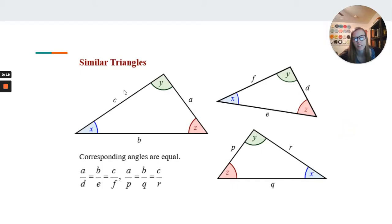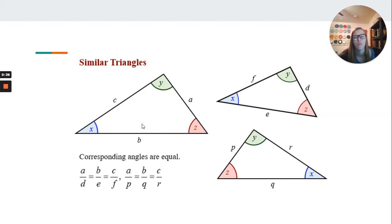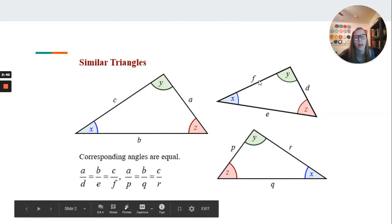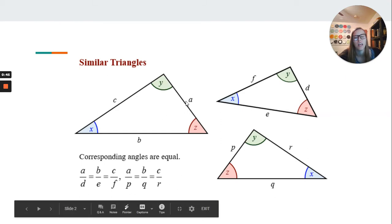So similar triangles. Similar triangles mean that the angles are the same and that the corresponding angles are equal. And so here we have A over D, because those are the corresponding angles, would be equal to B over E, which would be equal to C over F, which then would also be similar to A equals P, B equals Q, and C equals R.